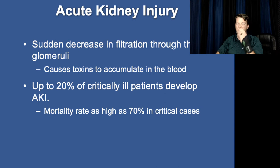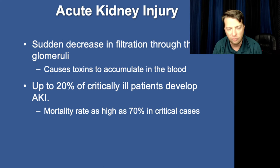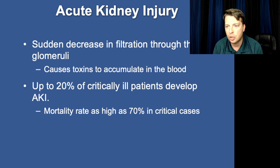Acute kidney injury — this is anytime you have a reduction in your glomerular filtration rate, your GFR. Remember, this is supposed to be about 135 milliliters a minute — that's a lot of filtrate being produced every minute.